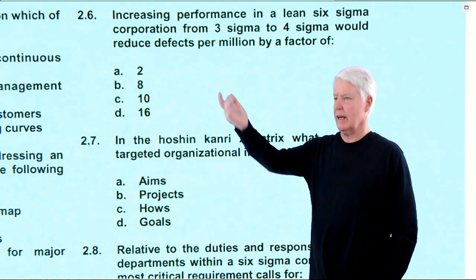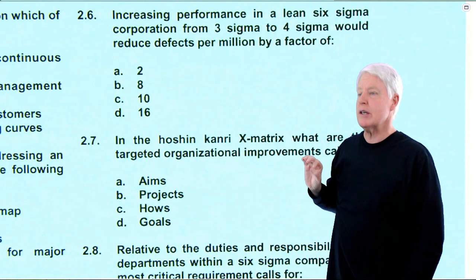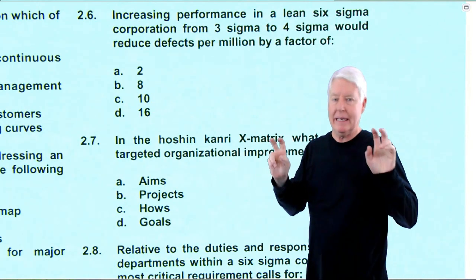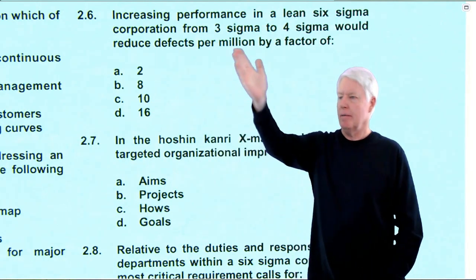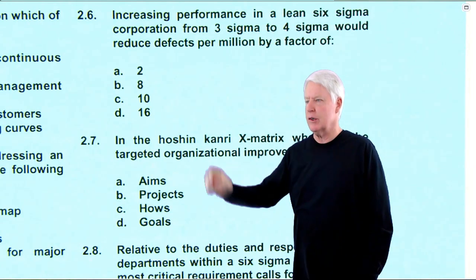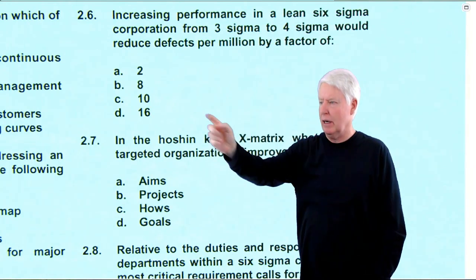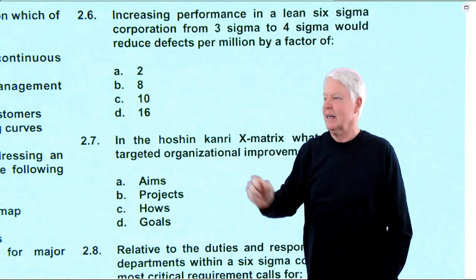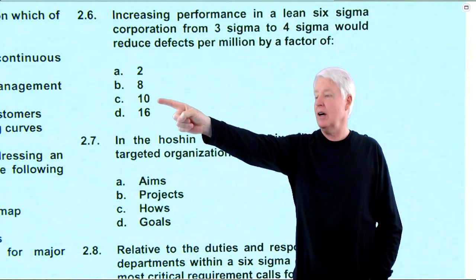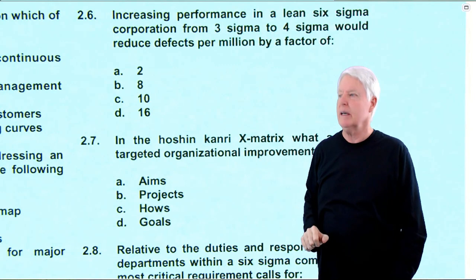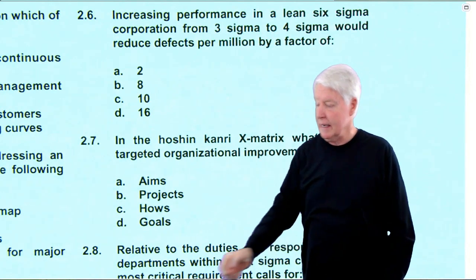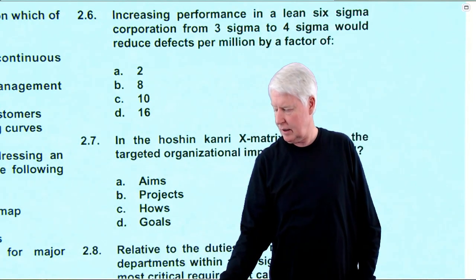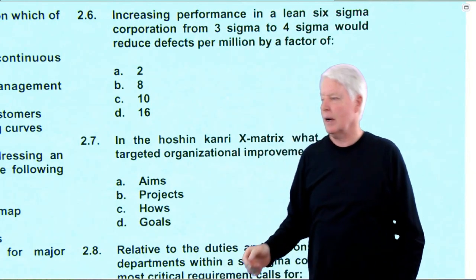Back at question 6: increasing performance in a lean Six Sigma corporation from three sigma to four sigma would reduce defects per million by a factor of what? The calculated answer was 10.7-something. There's no 11 as an option, so 10 is the closest. The answer is C, and that is correct.